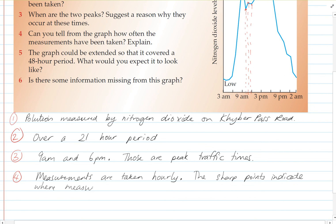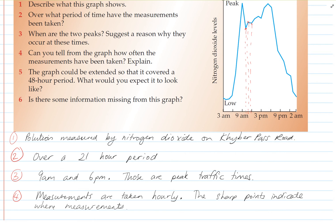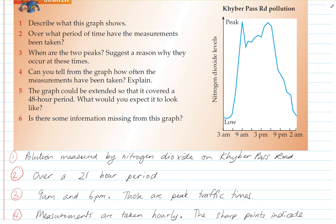So if it was smoother, we would not be able to tell when the measurements were taken. They might be taken every minute or something like that. But because the graph is sharp, it shows that we can see when they've been taken.